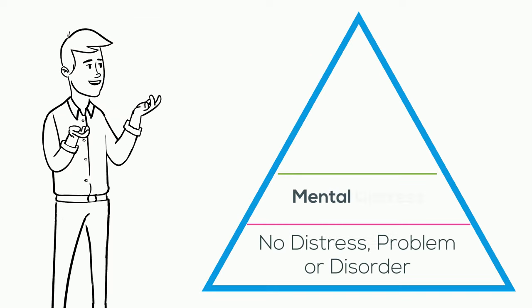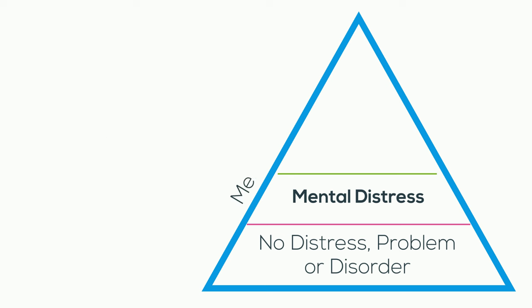One level up, we have mental distress. Mental distress refers to the everyday problems that we encounter. These are things that irritate us, things that we're worried about, or problems that come our way.